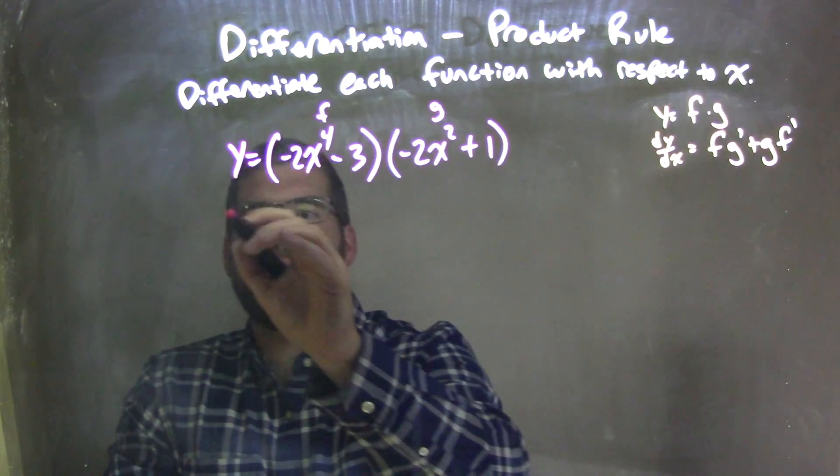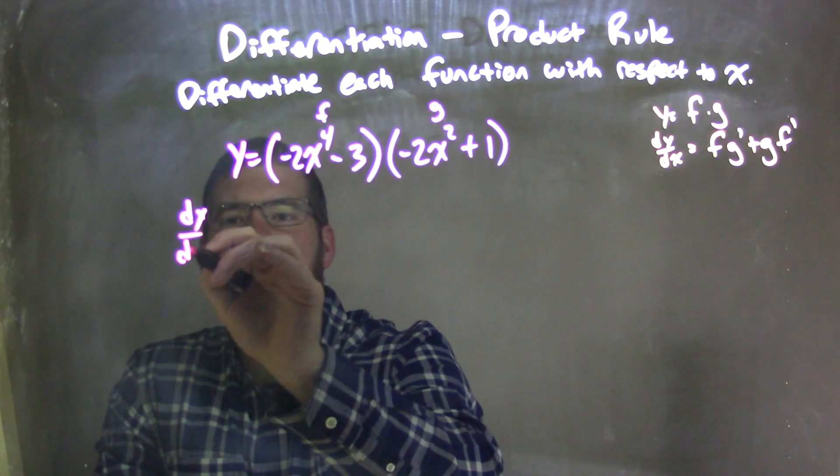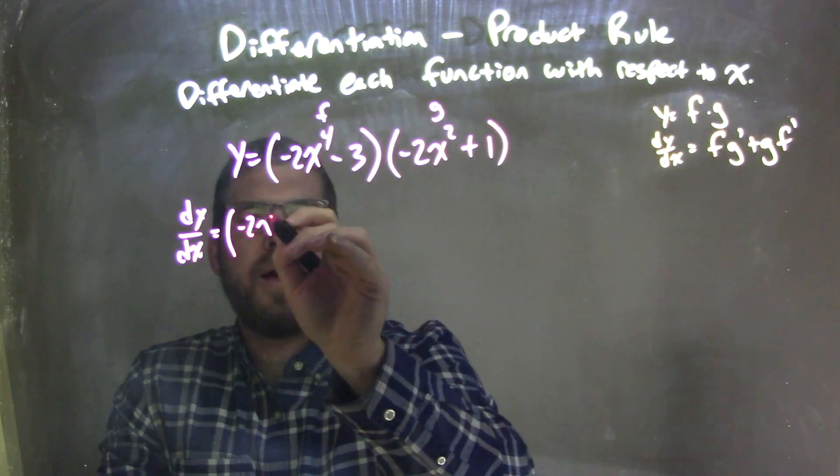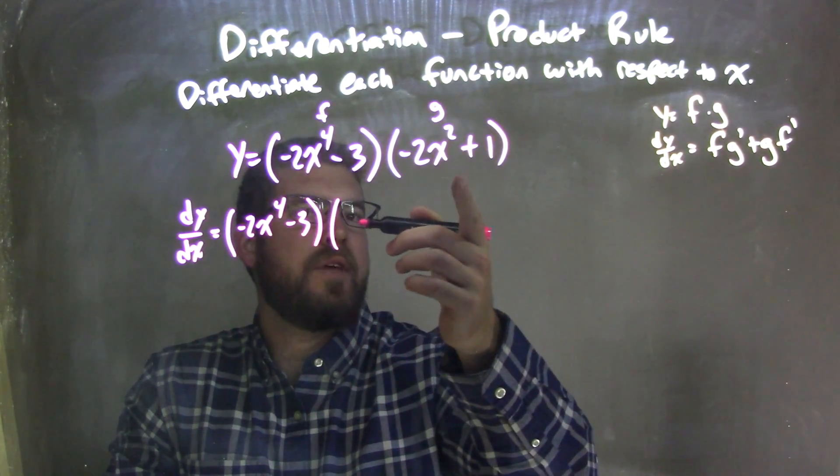So now I'm going to apply the product rule. Product rule states, I'll take my dy/dx here. The first part, f, negative 2x to the 4th minus 3, times the derivative of the second.